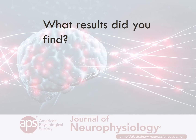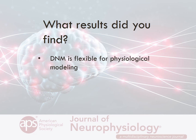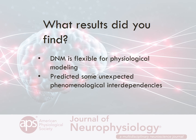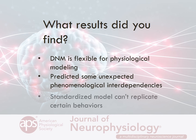Tell us about the results you found. First, the model is flexible — it can emulate almost all phenomena of V1 neurons reported in past physiological studies simply by modifying its parameters. At the same time, the model predicts interdependence between certain observable phenomena. Some of these interdependencies were completely unexpected. These phenomena were affected critically by the same parameters of the model, and their interdependence could be predicted because the parameters were fixed for individual neurons.